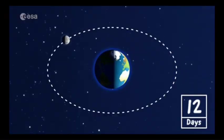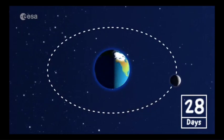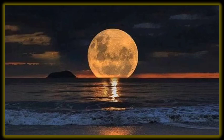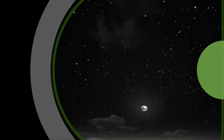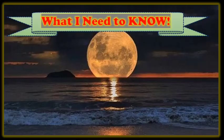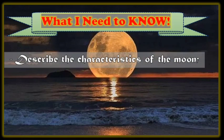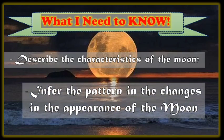You have probably observed how the Moon's apparent shape changes from day to day. Sometimes you can see a full round Moon low in the sky, and other times only half of the Moon is visible and it's high in the sky at sunset. Sometimes the Moon is visible during the day. Why does the Moon look the way it does? What causes it to change its appearance and position in the sky? In this lesson, you will be able to describe the characteristics of the Moon and infer the pattern in the changes in the appearance of the Moon.